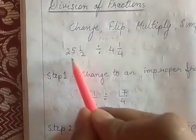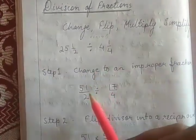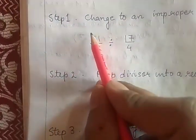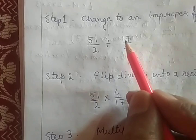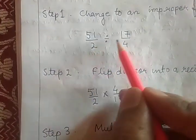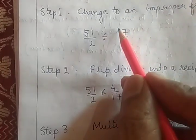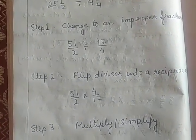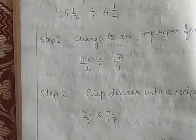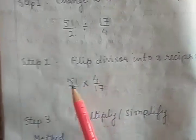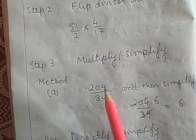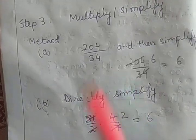Change means you have to convert the mixed fraction into an improper fraction. After making it into an improper fraction, we can flip it. Flip means reciprocal — the denominator will become the numerator and the numerator will become the denominator. Keep this side of the fraction fixed and flip the divisor fraction. So 17 by 4 becomes 4 upon 17 — that is the reciprocal. Then do the multiplication.